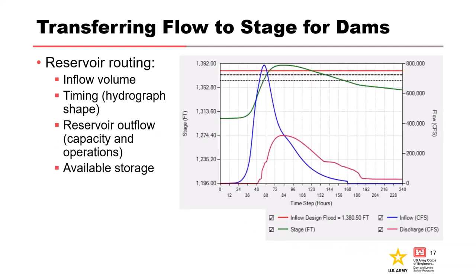Important factors for reservoir routing include the inflow volume, the timing defined with an inflow hydrograph, the reservoir outflow which includes not only outflow capacity but also reservoir operations like how fast and when spillway gates are opened. The available reservoir storage is important, often defined using the elevation-storage relationship. The available storage also takes into account the antecedent condition or initial starting pool — the higher the reservoir, the less available storage. An AEP-neutral approach would be to use the most common or 50% exceedance duration reservoir pool as a starting pool for routing. RMC RFA randomly samples a starting stage during its stochastic runs, doing this many thousands of times to come up with an overall estimate of uncertainty.